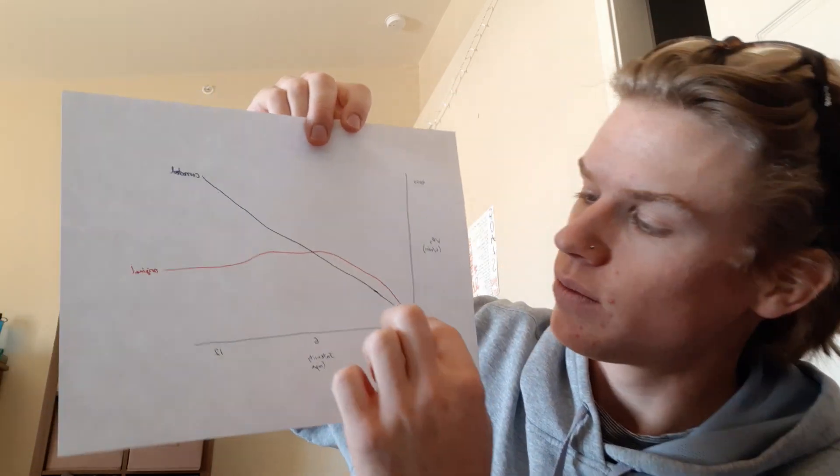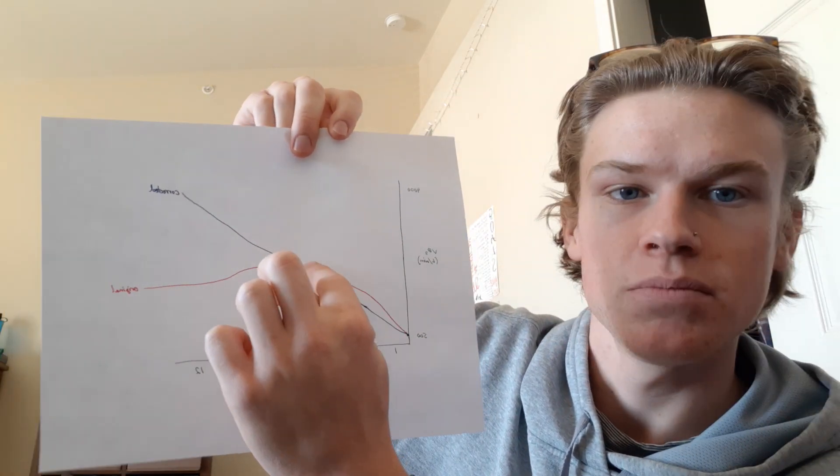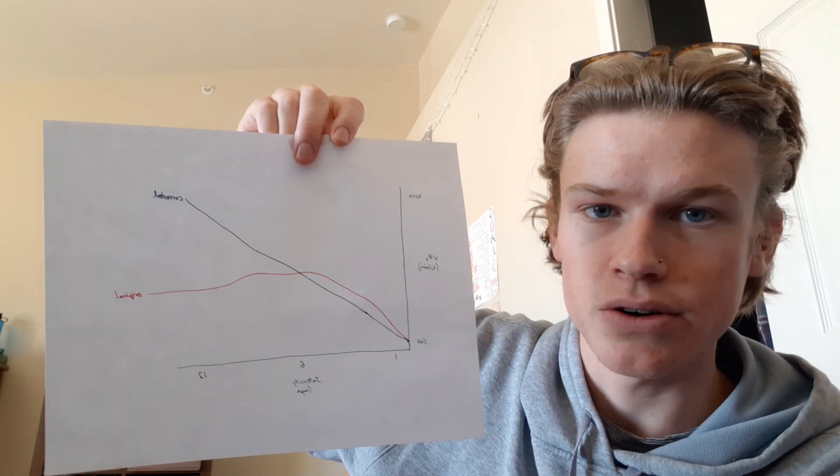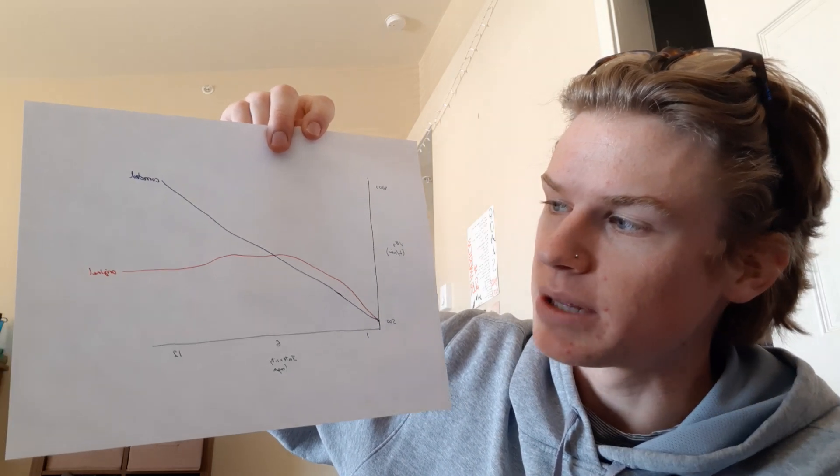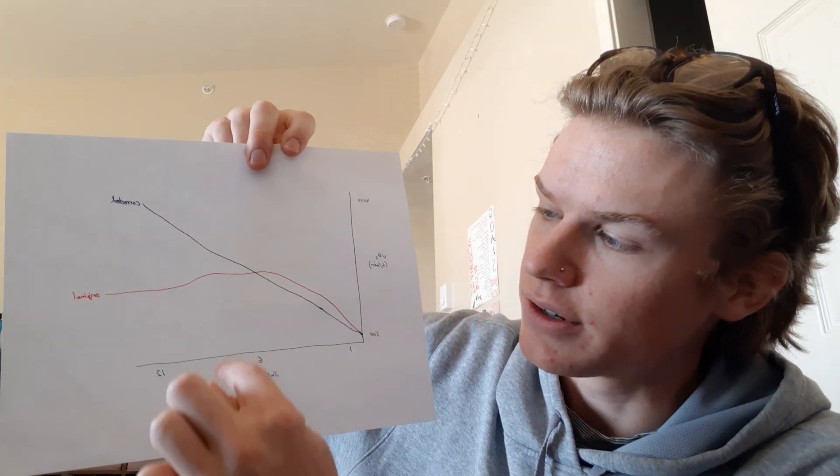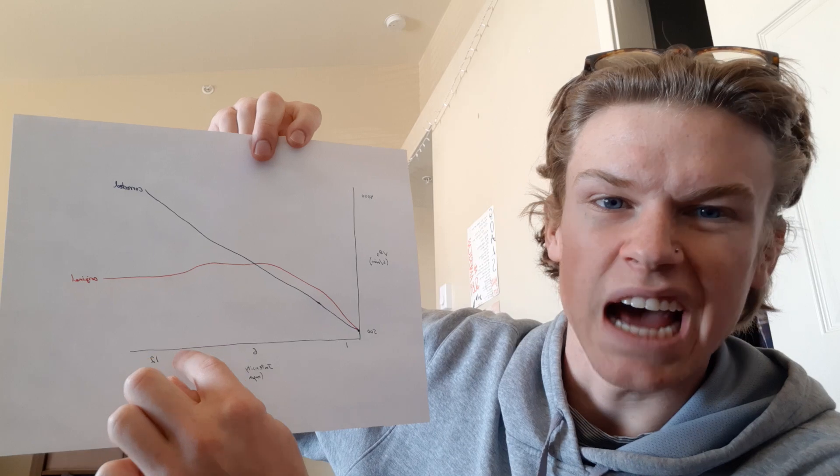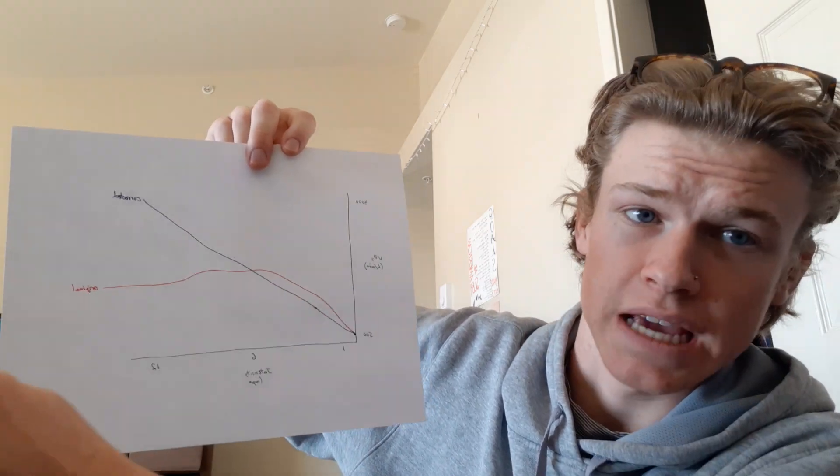So the red line is going to go up steadily like it should as the intensity increases going up to about five miles an hour on the treadmill. But then it plateaus, and then as the intensity goes up at about nine miles an hour, it drops, and then it plateaus again.